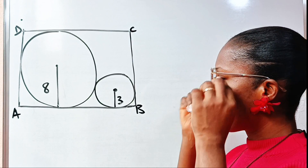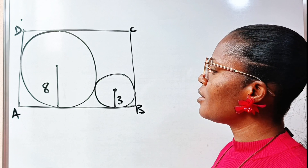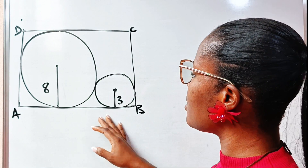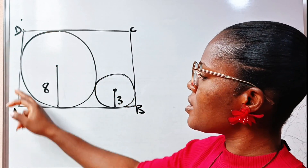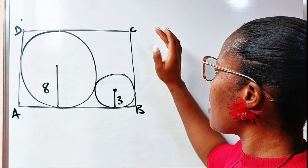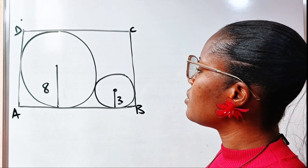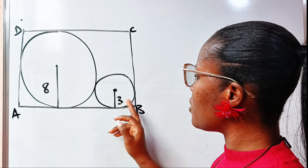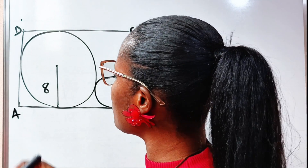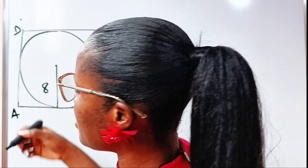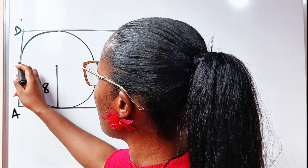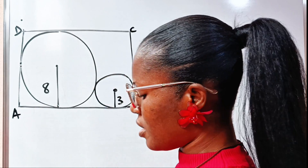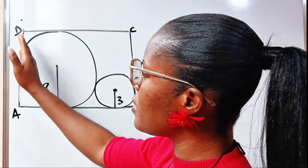Hello, wonderful friends, welcome back to my channel. Please note this is not drawn to scale. The question says we should find the area of rectangle ABCD. Eight is the radius of the big circle and three is the radius of the smaller circle. The center of the big circle is also at the center of line AD.